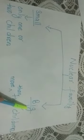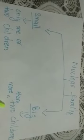Now, nuclear family is divided into two parts: small nuclear family and a big nuclear family. There is a very slight difference between them. In a small nuclear family, there are only one or two children. In a big nuclear family, there are more than two children. If you have more than two or three siblings, then you belong to a big nuclear family. But if you have only one sibling — that means you and your brother or your sister — then you belong to a small nuclear family.